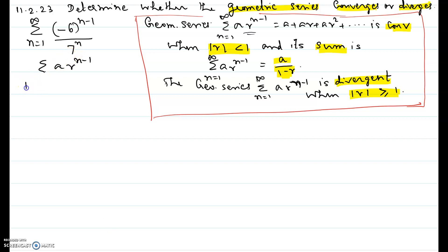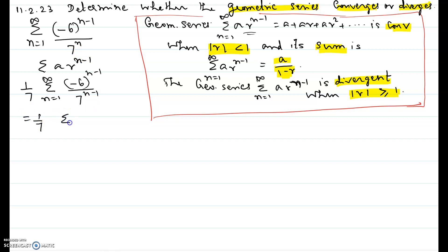We pull out a factor of 1 over 7, giving us 1 over 7 times sigma n varying from 1 through infinity of negative 6 over 7 to the power n minus 1. The 7 in the denominator makes it 7 to the power of n, and we write this as 1 over 7 times sigma of negative 6 over 7 to the power n minus 1.